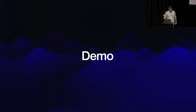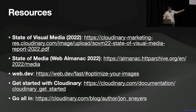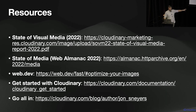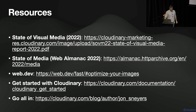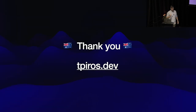Here are the resources: State of Visual Media is the Cloudinary report on image requests and format breakdowns. There's a link to Web Almanac, a link to web.dev which has an entire section on image optimization, Cloudinary documentation, and finally 'go all in' — Jorn Snijders, a senior image researcher at Cloudinary, whose blog posts are extremely deep dives into image formats, why JPEG works a certain way, quantization, and more. Thank you very much for listening.